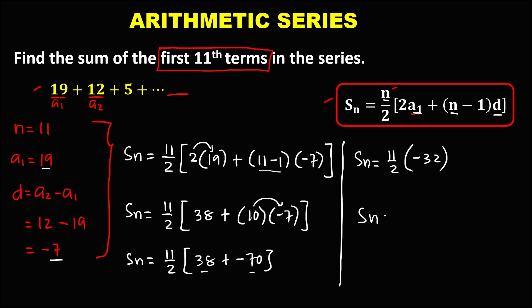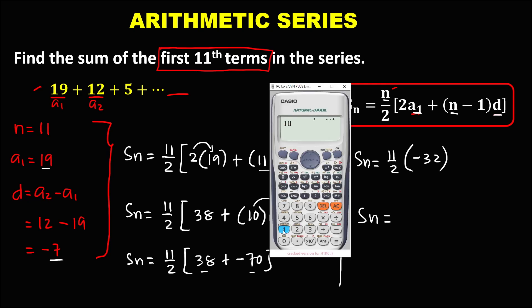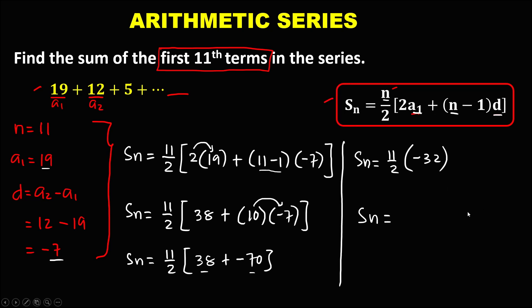So this is negative 32. To find now the sum, we have 11 divided by 2, times negative 32. So the sum of this arithmetic series is negative 176.